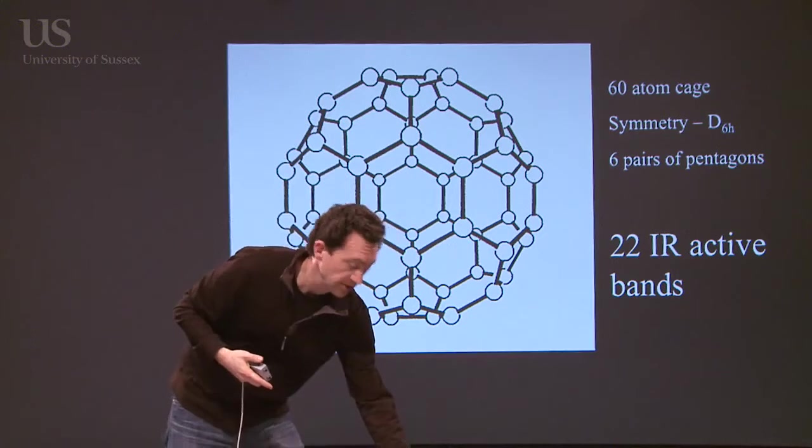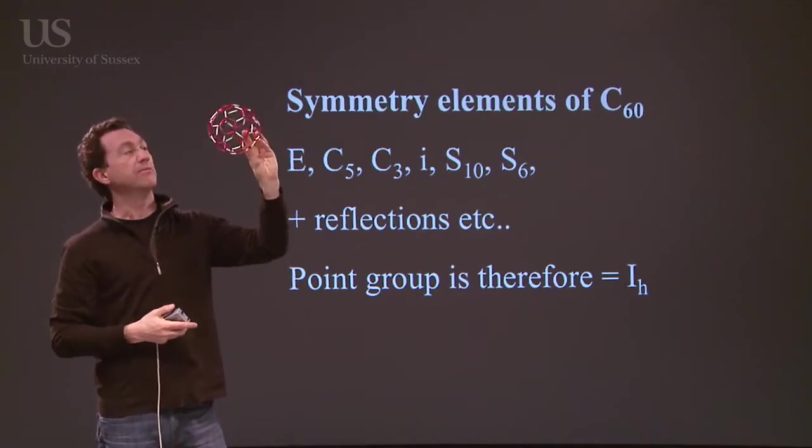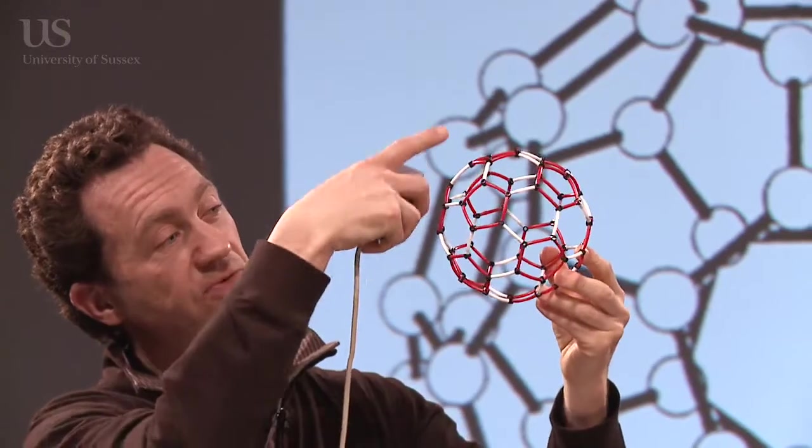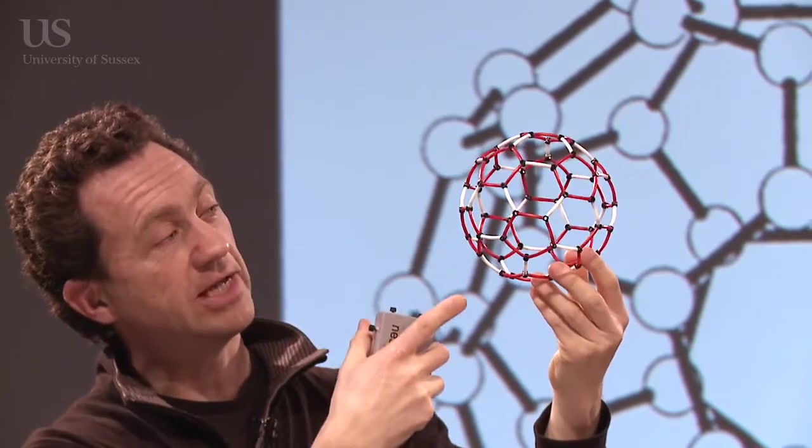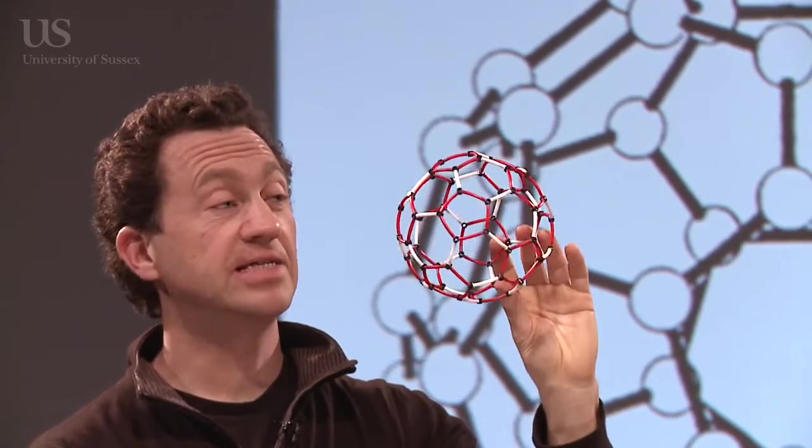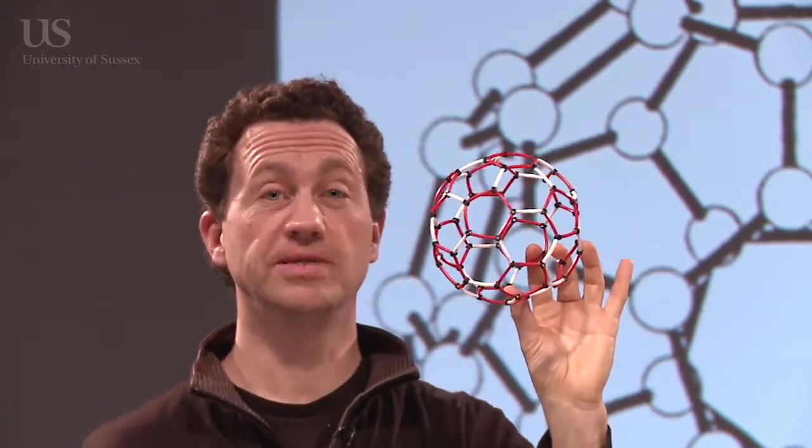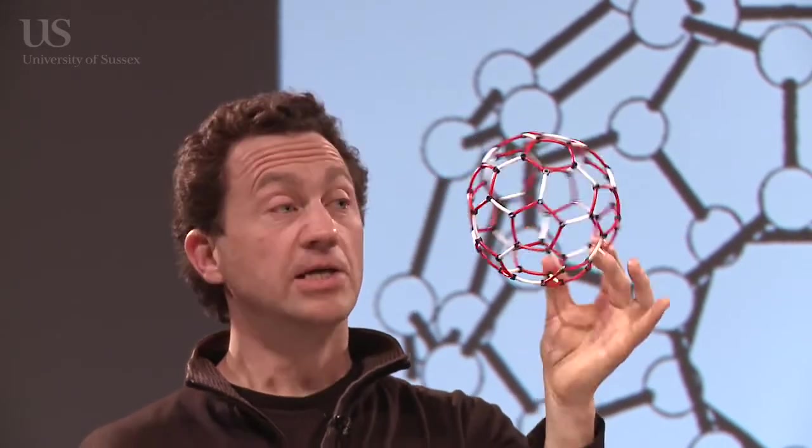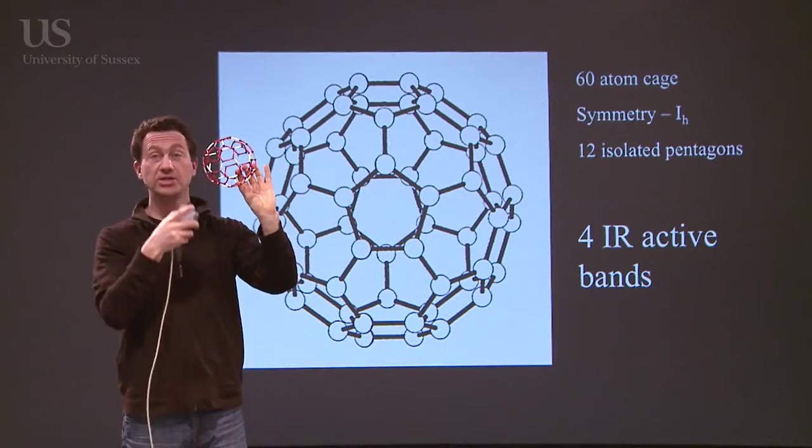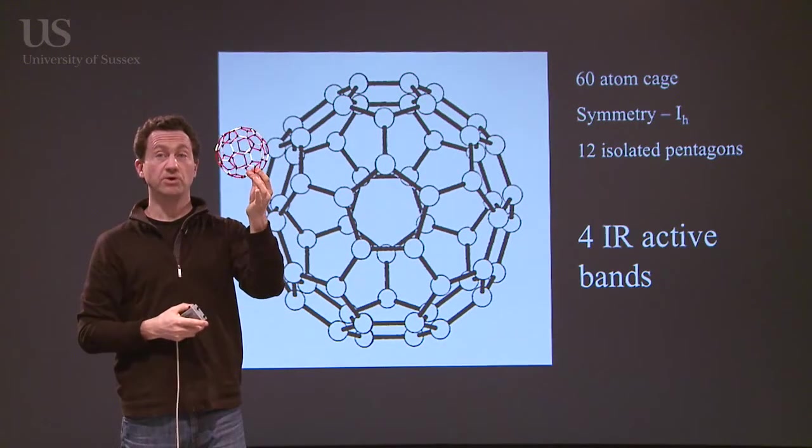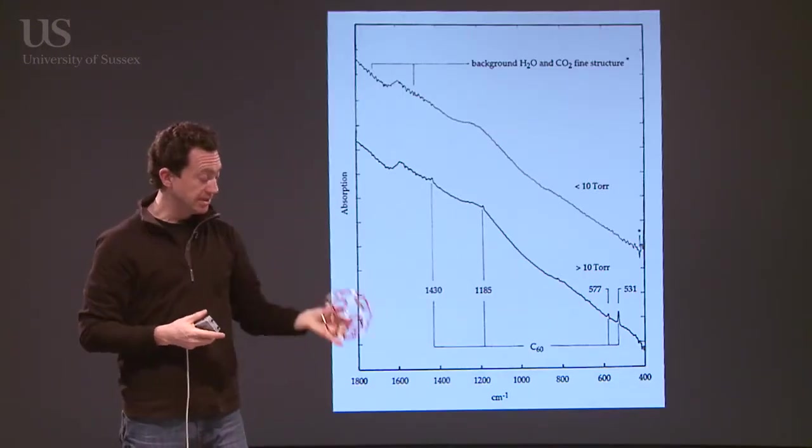And finally, if we go to the soccer ball molecule, because of this beautiful symmetry, because all the pentagons are isolated, it turns out that for a 60 atom molecule, this has an unbelievably few number of absorptions in the infrared. It only has four. So if you could make this molecule and put it in an infrared spectrometer, and you could measure the four absorptions, it would be a pretty good indication that you've got the round soccer ball molecule. And that's exactly what you see.